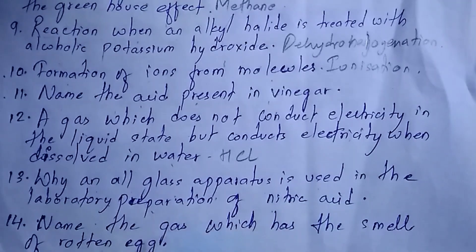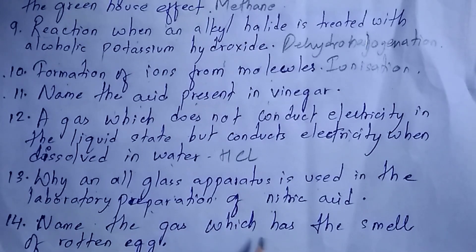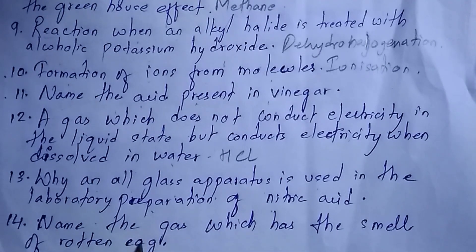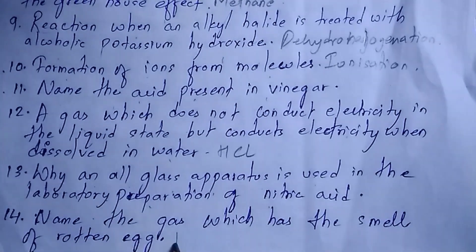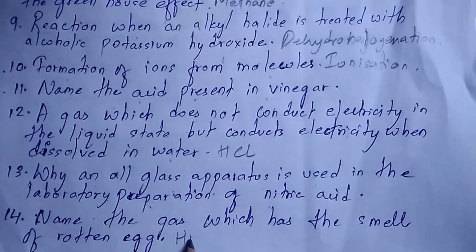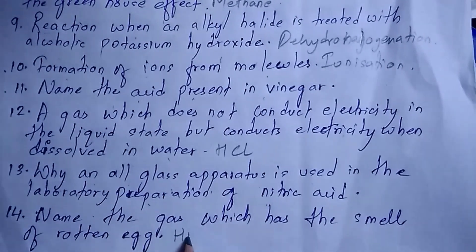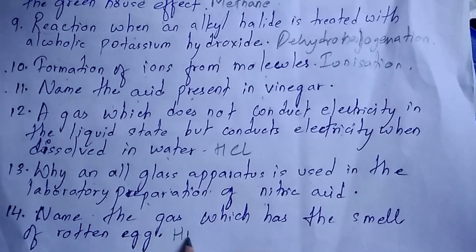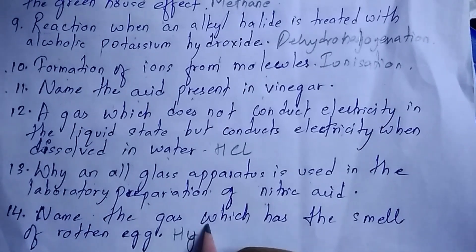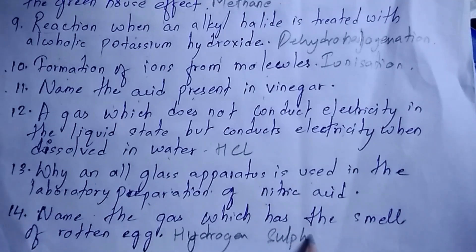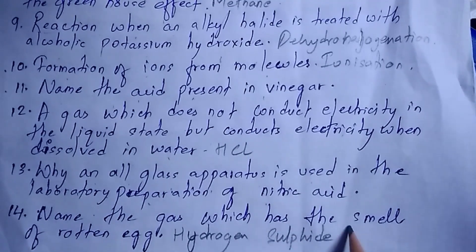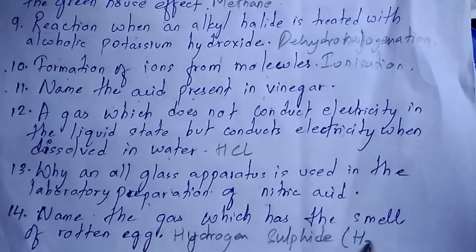Next question: name the gas which has the smell of rotten egg — it is hydrogen sulfide gas, formula H₂S. This is also a very common question asked in your board exams.